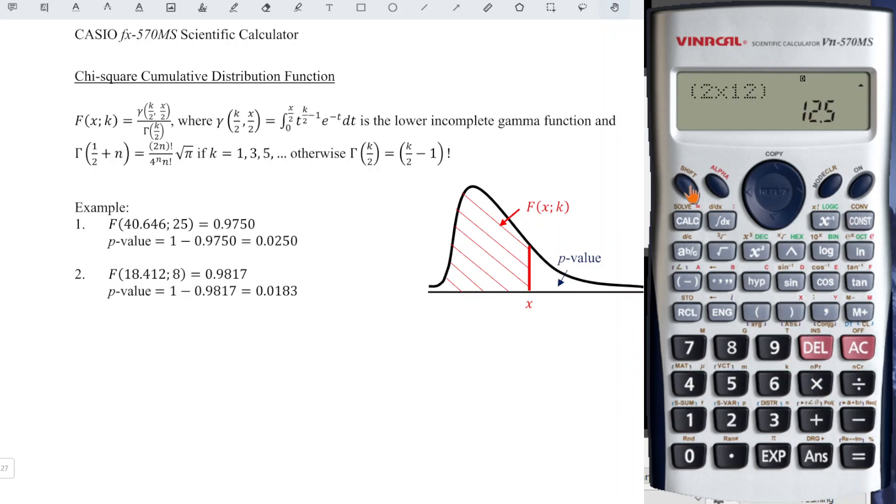The whole thing factorial. And we divide 4 to the power of n, which is 12 times 12 factorial. And we times square root of